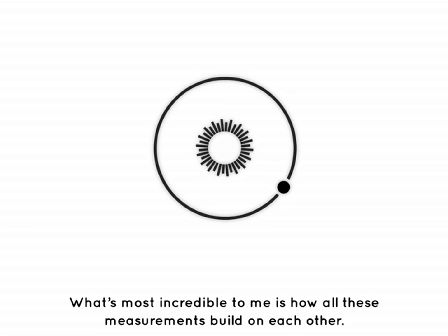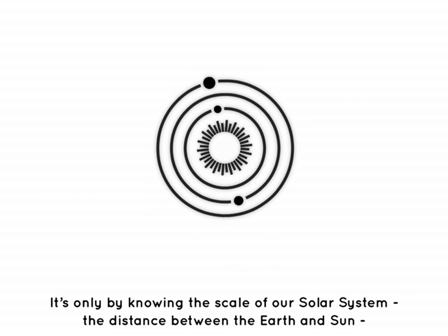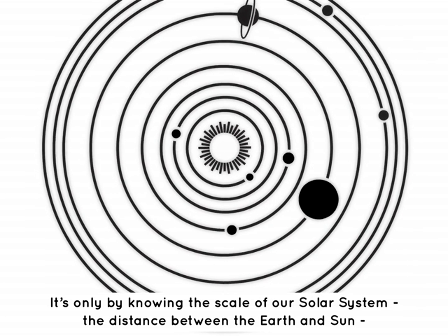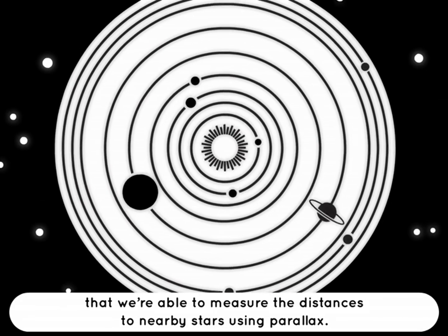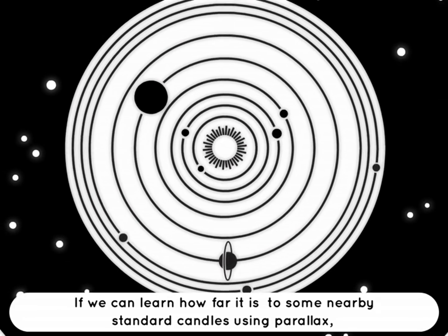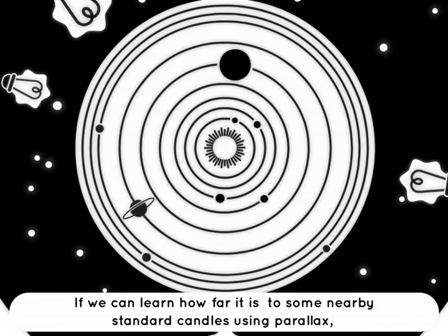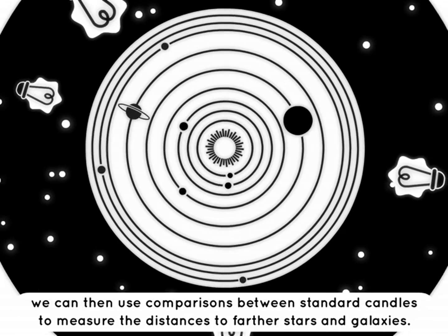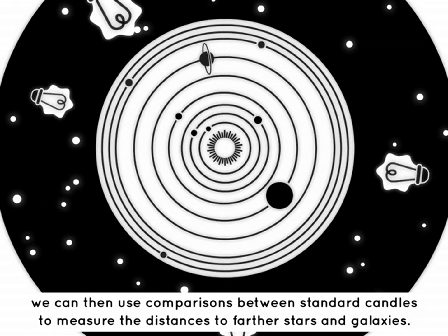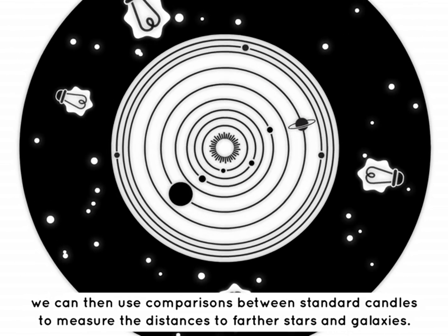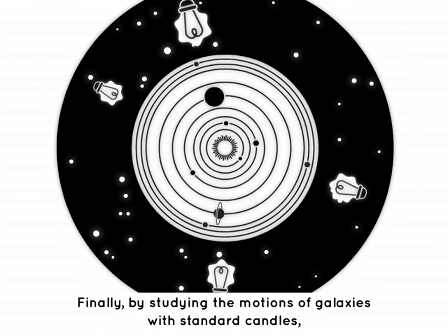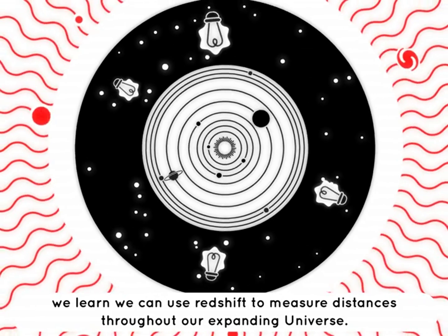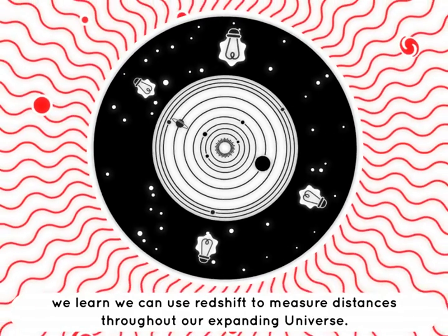We know how far away things are in the distant universe by measuring how redshifted their light is. What is most incredible is how all these measurements build on each other. It is only by knowing the scale of our solar system — the distance between the Earth and the Sun — that we are able to measure the distances to nearby stars using parallax. If we can learn how far it is to some nearby standard candles using parallax, we can then use comparison between standard candles to measure the distances to farther stars and galaxies. Finally, by studying the motions of galaxies with standard candles, we learn we can use redshift to measure distances throughout our expanding universe.